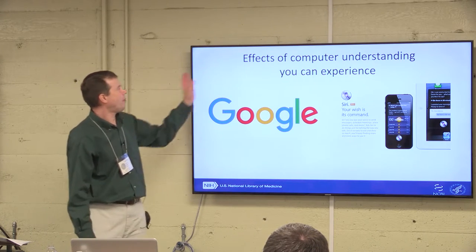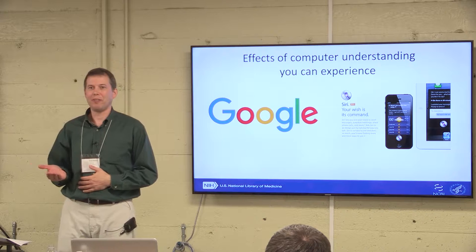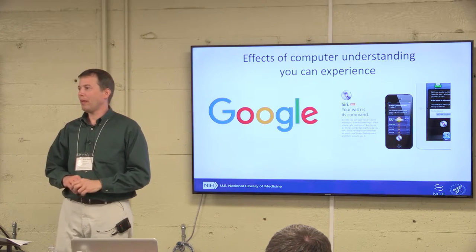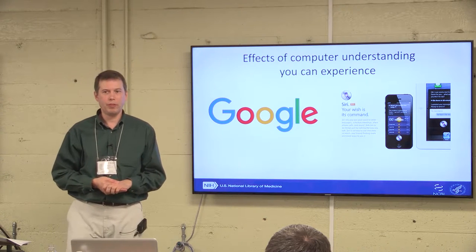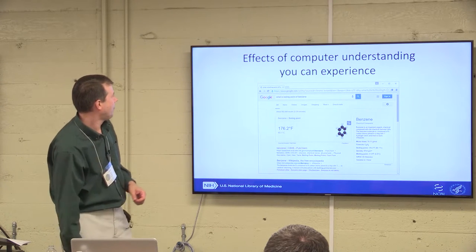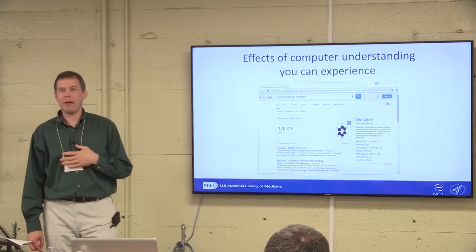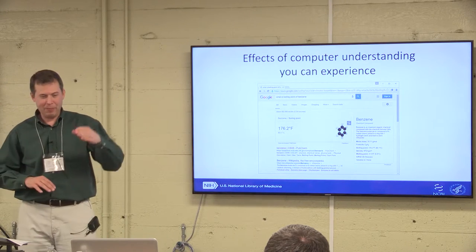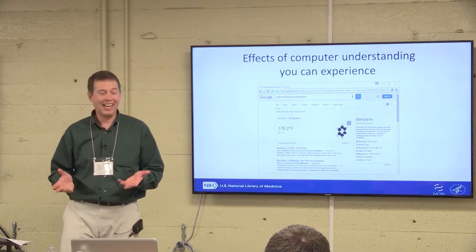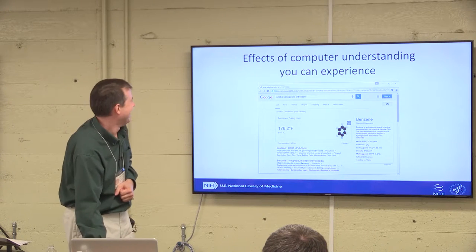You can experience computer understanding just by going to Google or Siri. You can ask natural language questions, and if the computer really understands, no matter how vague you are, it can come up with something reasonable. For example, if you go to Google and say 'what is the boiling point of benzene?' it'll tell you. But if you go somewhere like PubChem, it might just search for documents mentioning both boiling point and benzene. Why don't you use Google as a back-end engine?